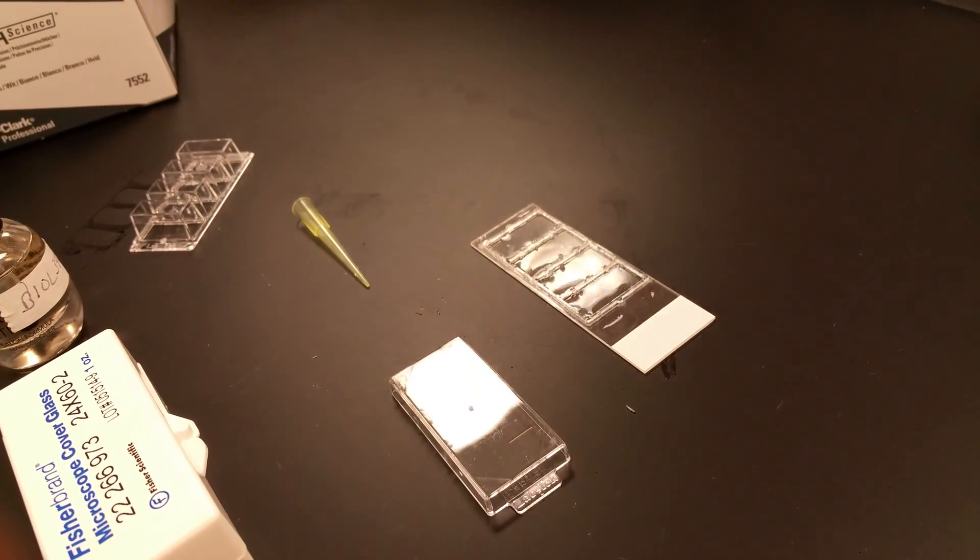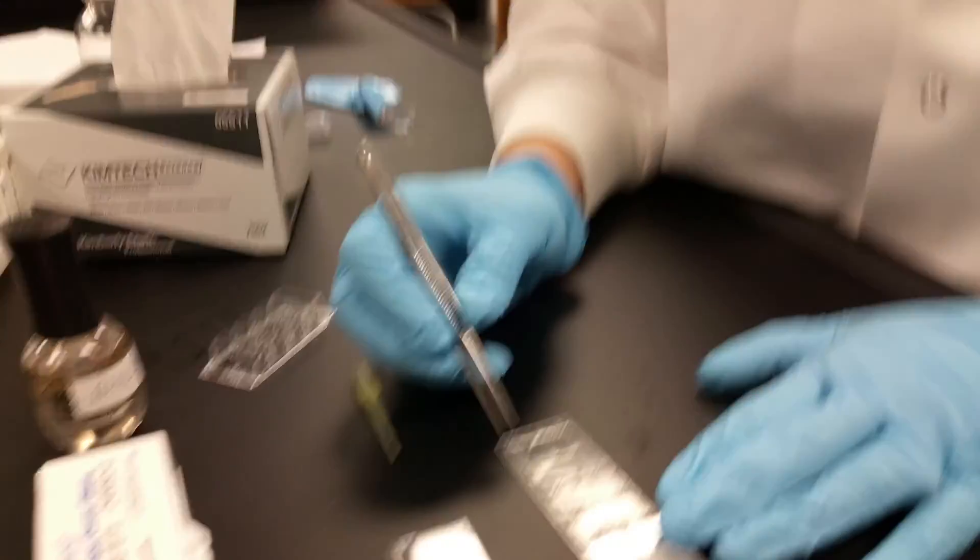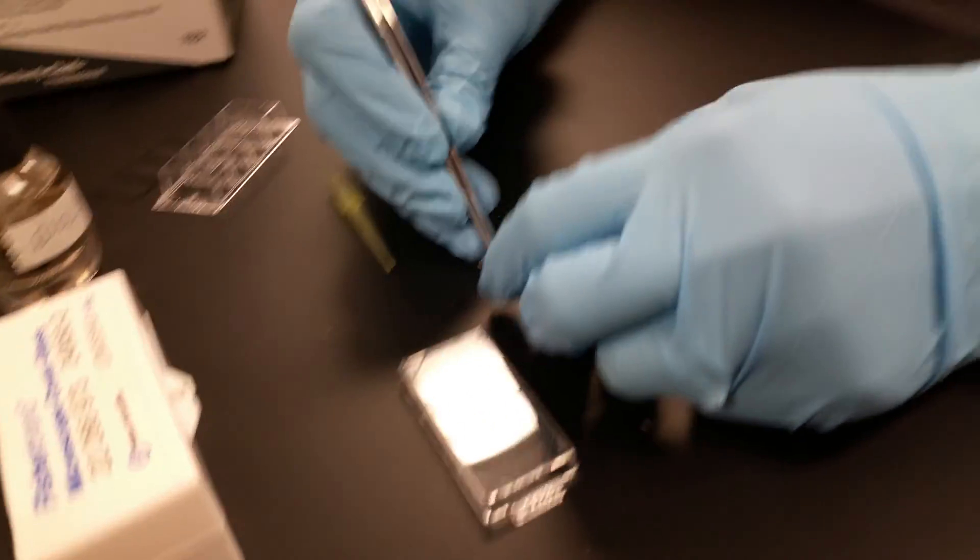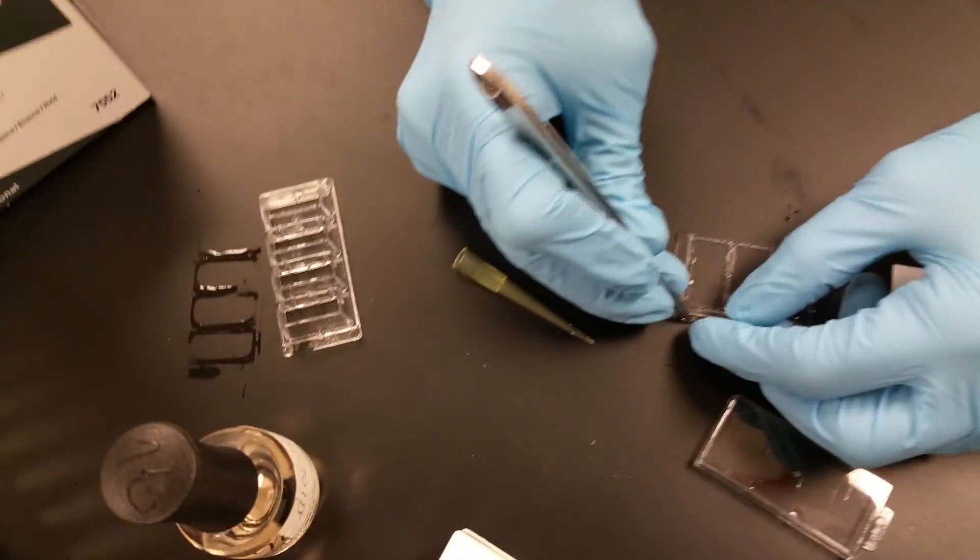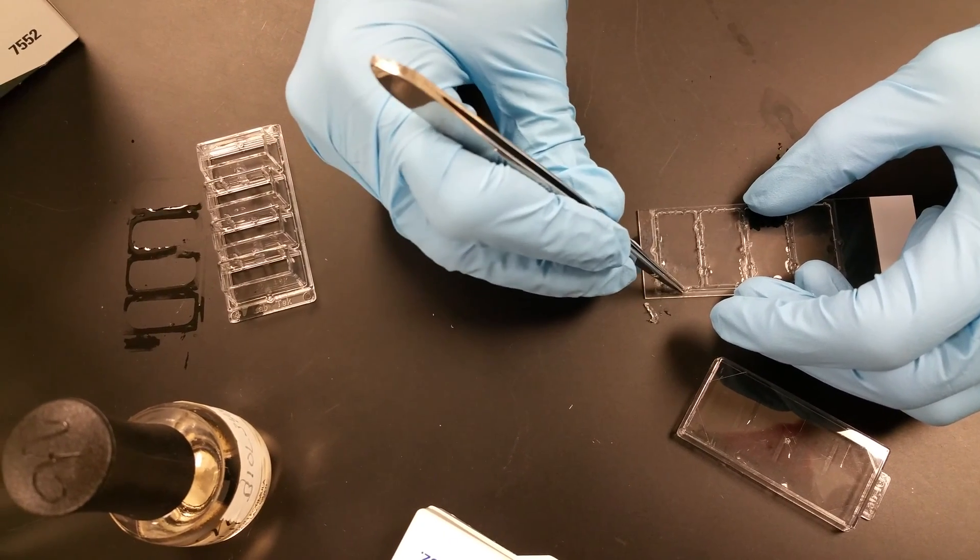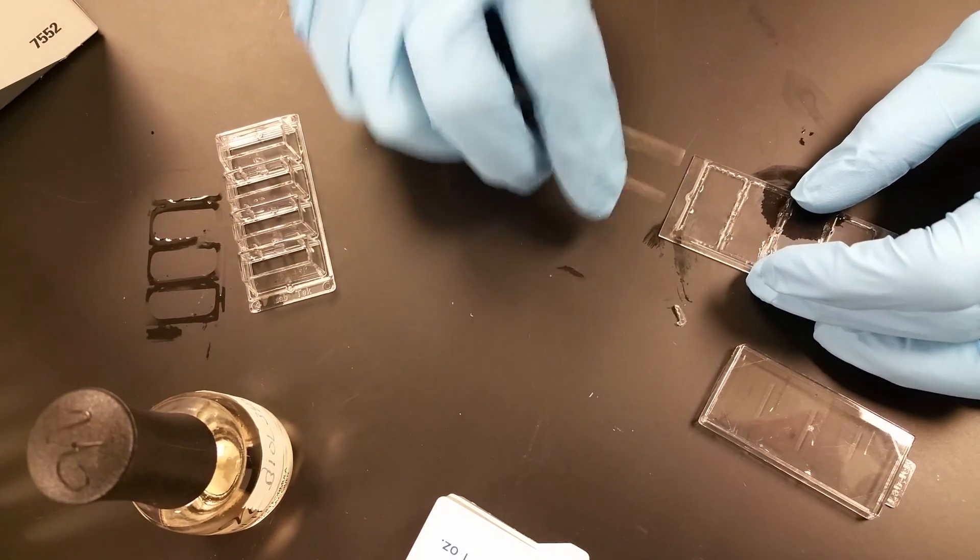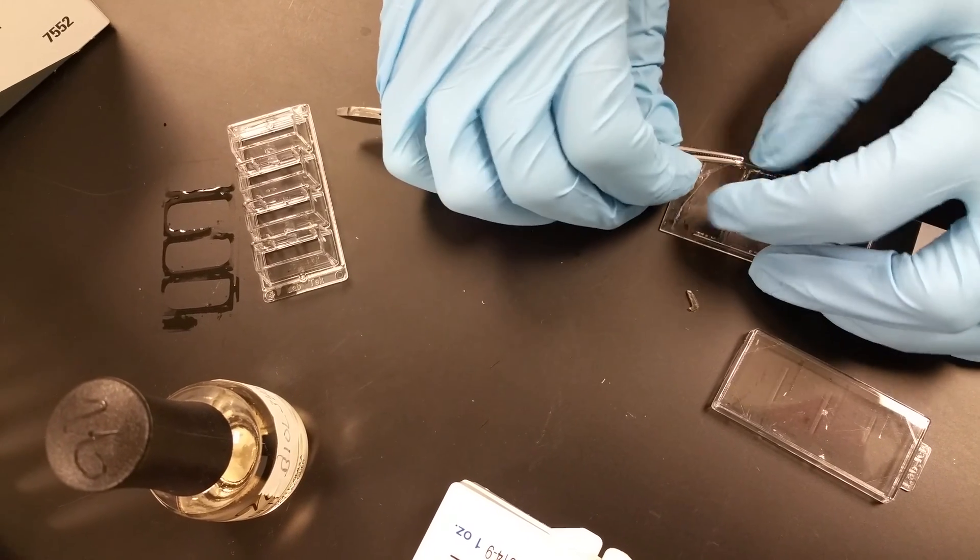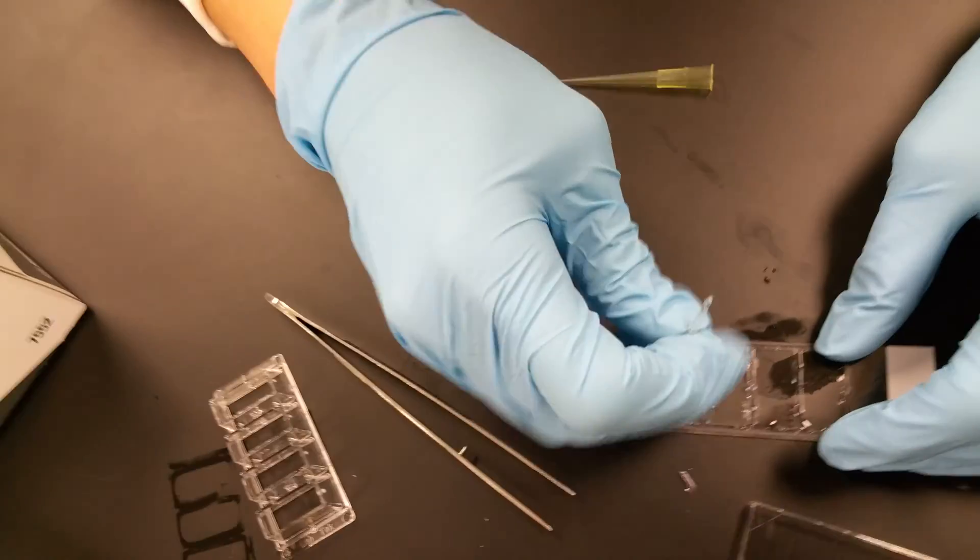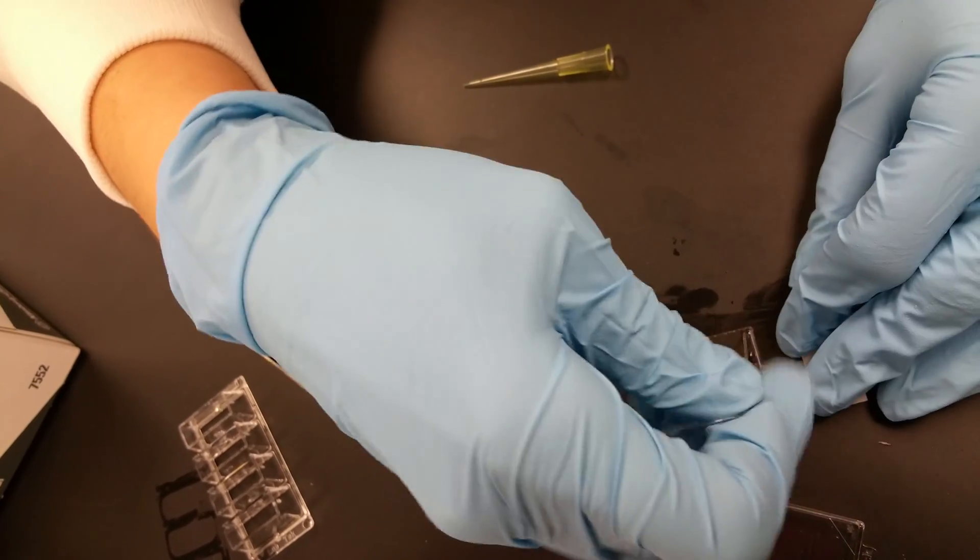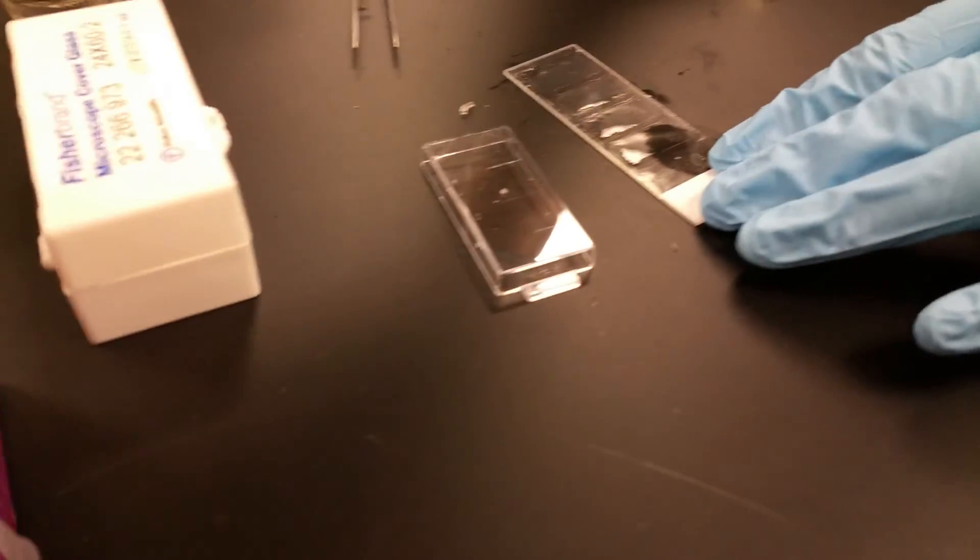With your tweezers, you can pull that off. Once you're able to pick up a piece of it, you can just peel this off the rest of the way. Now this part is gone.